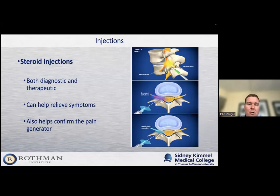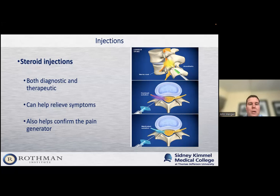For patients where first-line treatment doesn't fully work and they're still symptomatic, we can consider getting an epidural steroid injection. These are both diagnostic and therapeutic. They can help alleviate symptoms, and for me as a surgeon, it helps identify that we're treating the right pain generator. If we can give an injection that gives some relief, even if temporary, then we know we're targeting the right area to treat the pain.